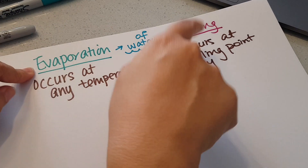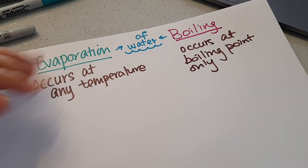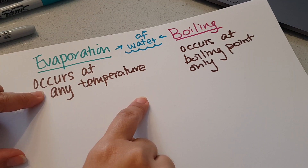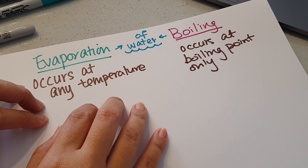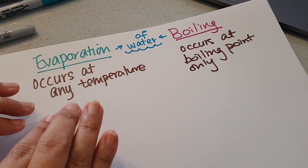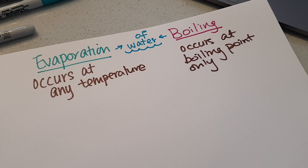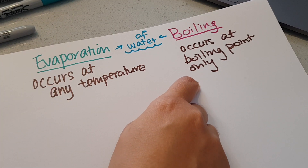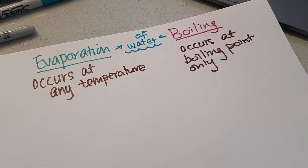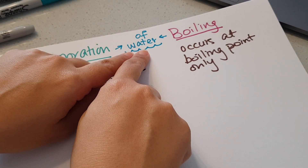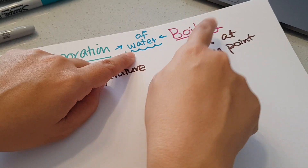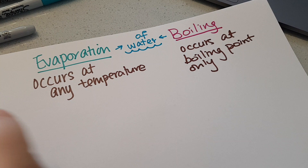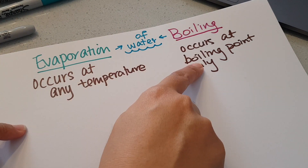So at any temperature when water is in liquid state, evaporation can be happening. However, boiling only occurs at the boiling point — and the boiling point for water is 100 degrees Celsius. So for water, only at 100 degrees Celsius will boiling be happening. That is the first main difference between evaporation and boiling.